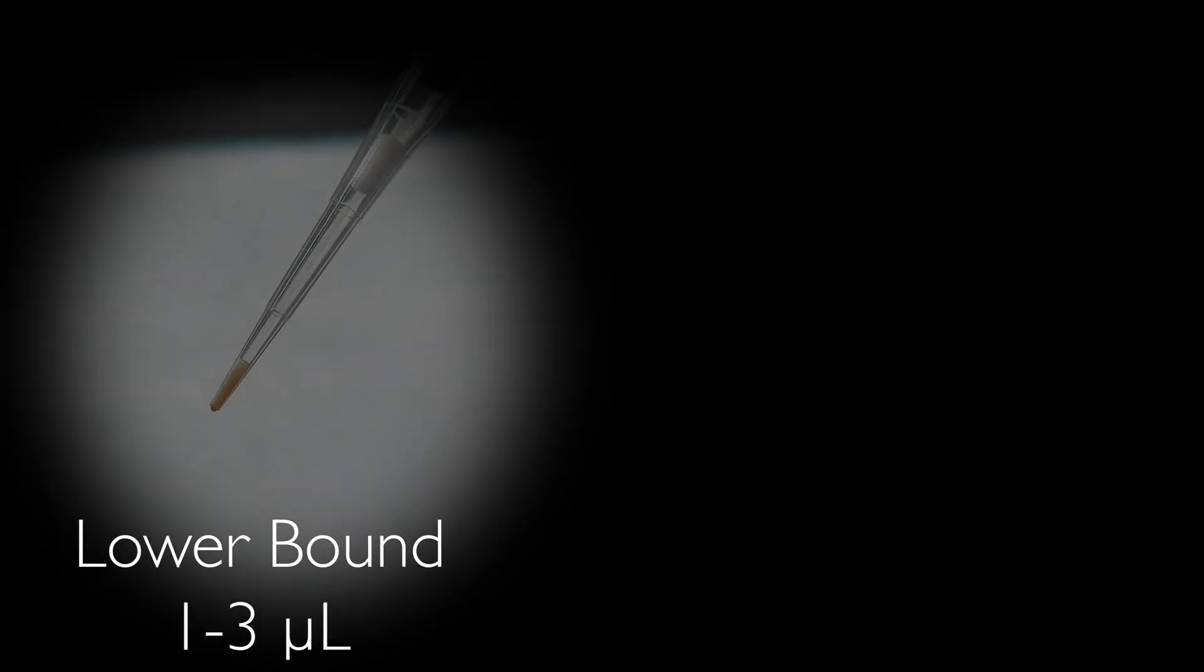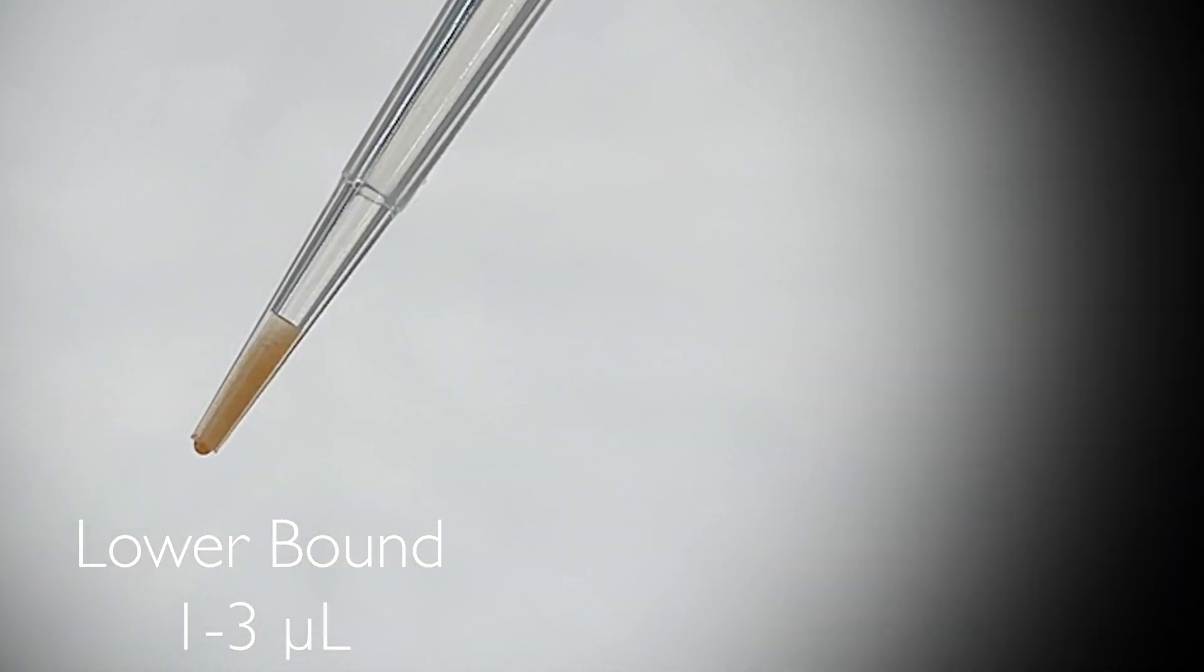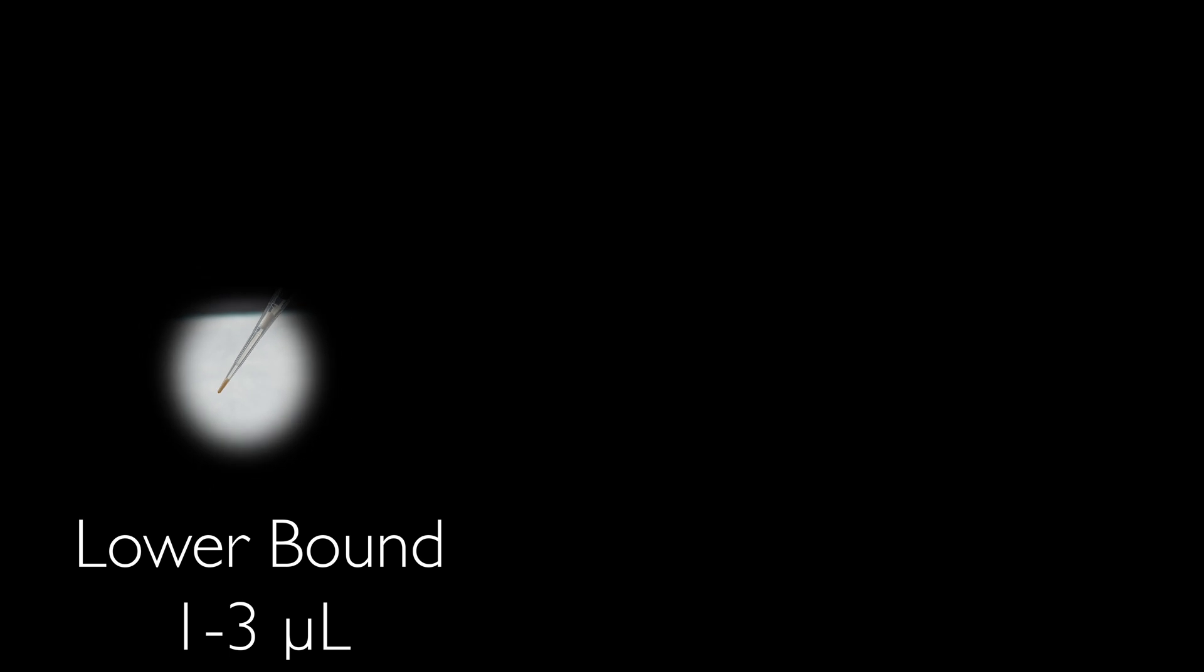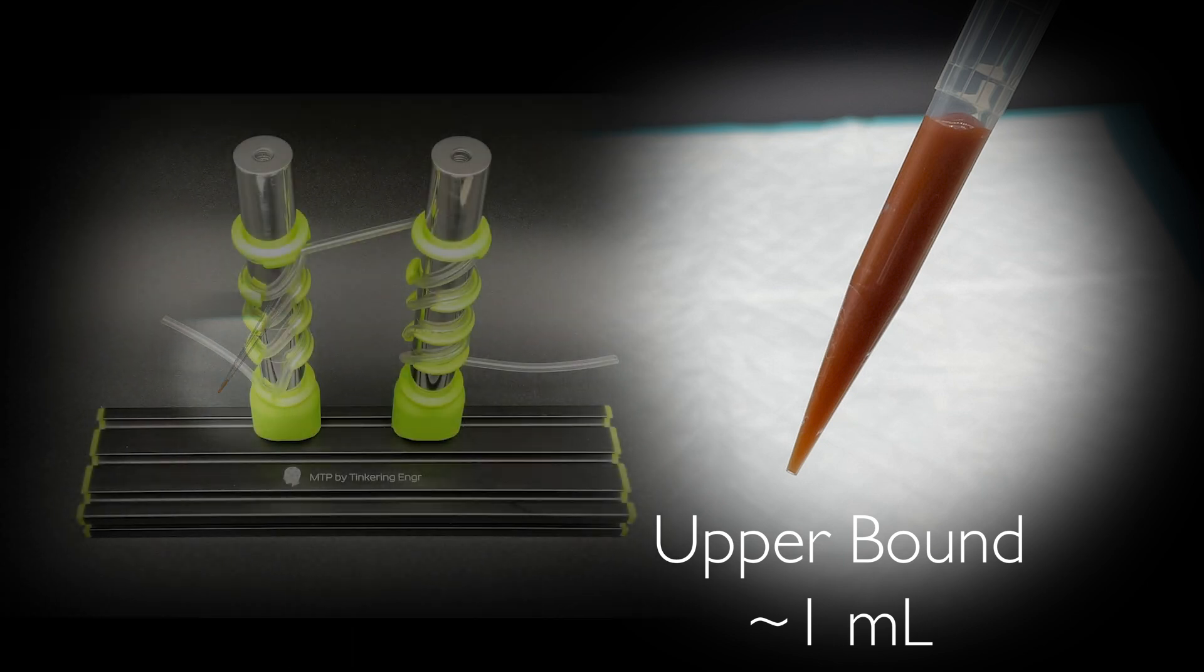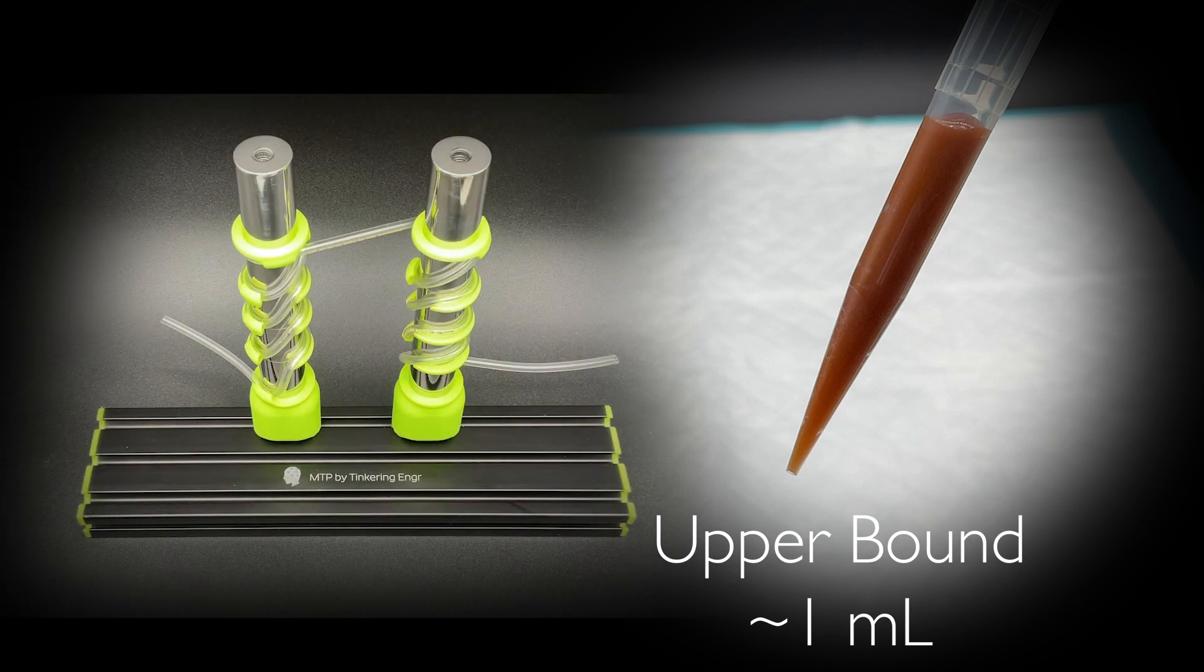But for the lower bound, you probably wouldn't want to go below a few microliters due to the difficulty of just seeing the resin. And for the upper bound, depending on the resin, I've tested less than one milliliter of resin before the magnetic trap becomes saturated. You can always add more magnetic traps in series if you need to do larger purifications.